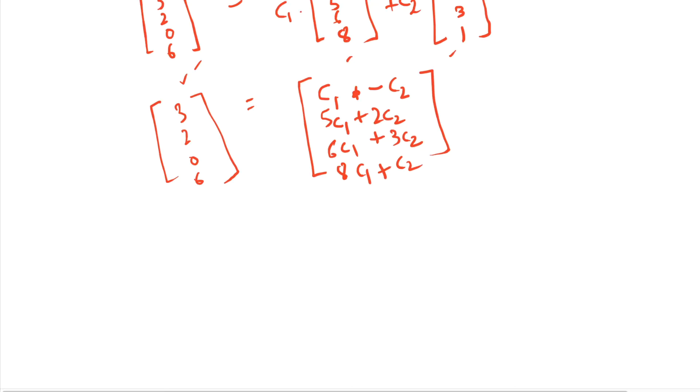So with this, we can form the following equations. So c1 minus c2 has to be equal to 3, and 5c1 plus 2c2 has to be equal to 2, and